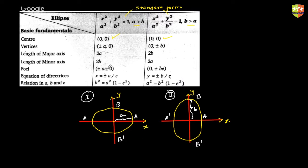The foci are always located on the major axis — always on the major axis. The major axis contains the foci, the vertices, and the center. For the type 1 ellipse, the foci are at (±ae, 0); for the type 2 ellipse, they are at (0, ±be).